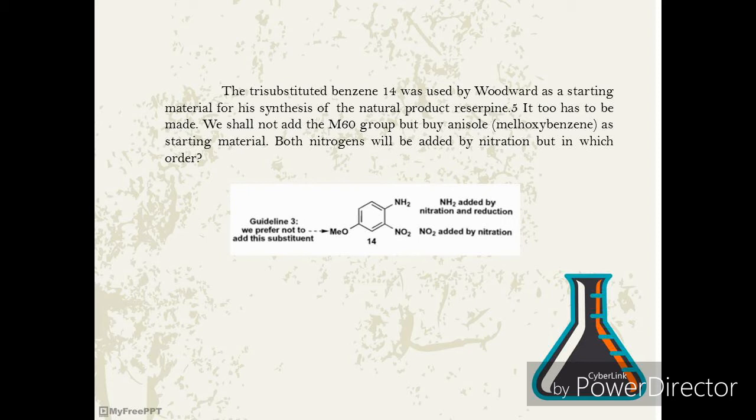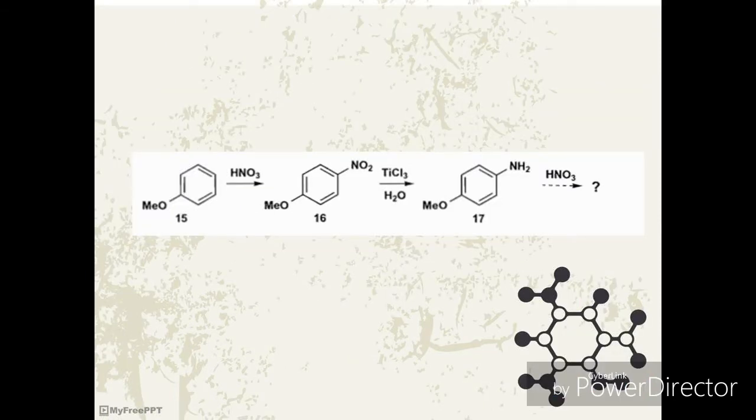The trisubstituted benzene 14 was used by Woodward as a starting material for his synthesis of the natural product reserpine. 5A2 has to be made. We shall not add the MeO group but buy anisole, methoxybenzene, as starting material. Both nitrogens will be added by nitration, but the MeO group is ortho-para-directing, so nitration of anisole 15 will give mostly the para-product 16.